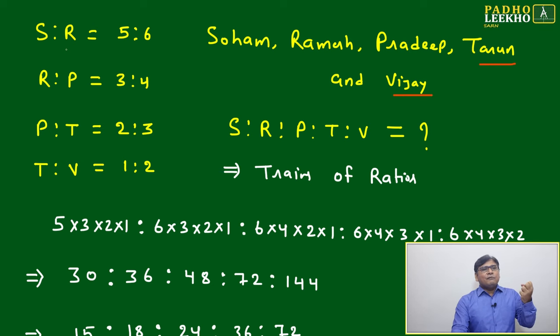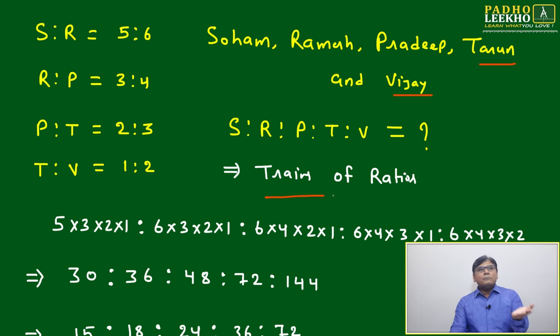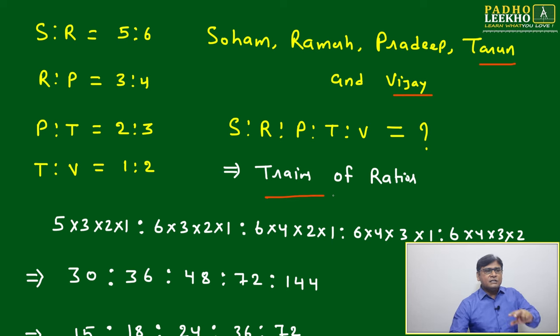Again, it is given in the form of a train of ratios, like consecutive ratios. We have seen Soham ratio Ramesh, Ramesh ratio Pradeep - these two ratios we have seen. Now we'll just continue.